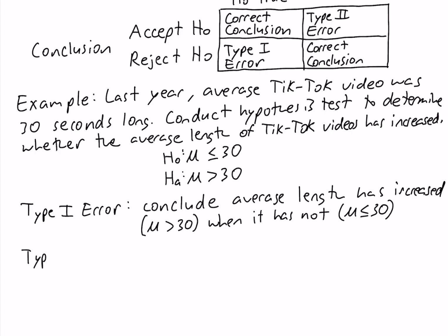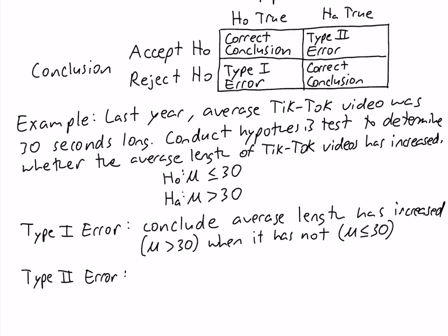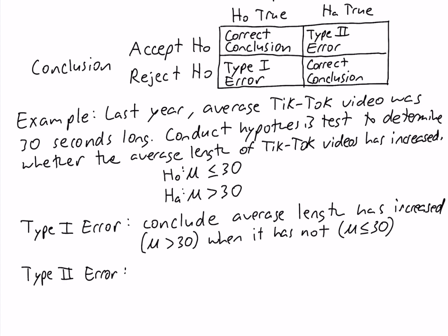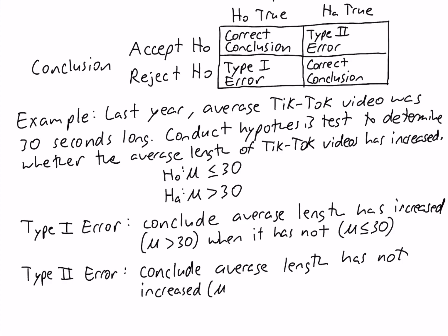A type 2 error is when you accept the null when the alternative is true. So accepting the null in this example means you conclude the population mean is less than or equal to 30, when the alternative being true means the population mean is actually greater than 30. So you would be concluding that the average length of TikTok videos has not increased, when in fact it has increased.